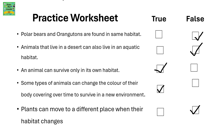Practice worksheet. Polar bears and orangutans are found in the same habitat — false. Polar bears live in a colder region, whereas orangutans live in a rainforest. Animals that live in a desert can also live in an aquatic habitat — false. An animal can survive only in its own habitat — true. Some types of animals can change the color of their body covering over time to survive in a new environment — true. Plants can move to a different place when their habitat changes — false.